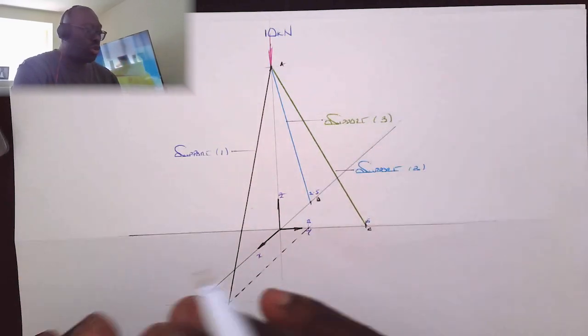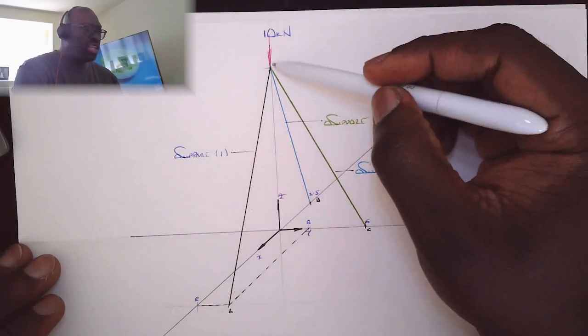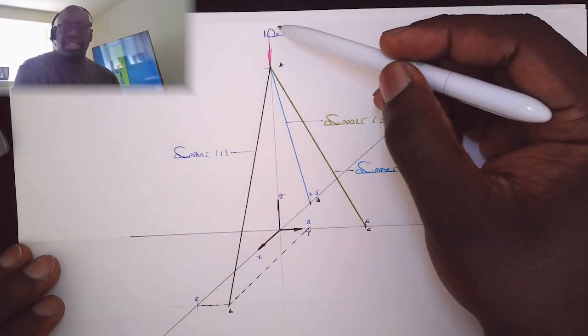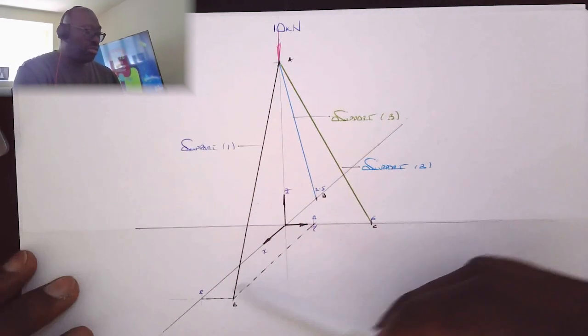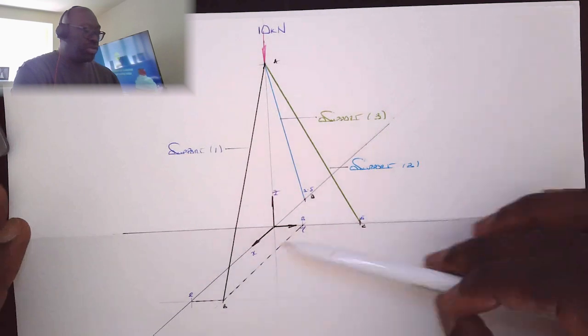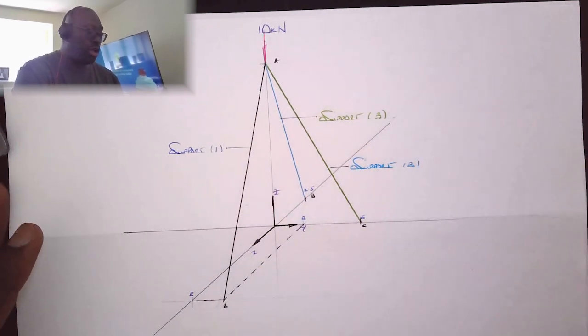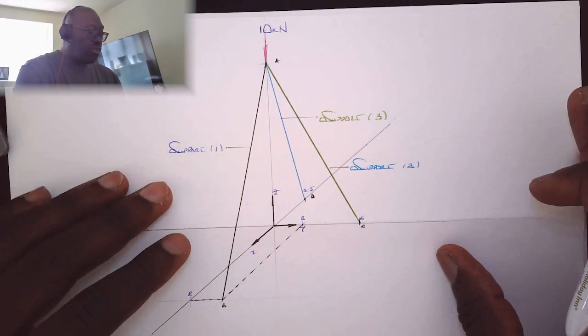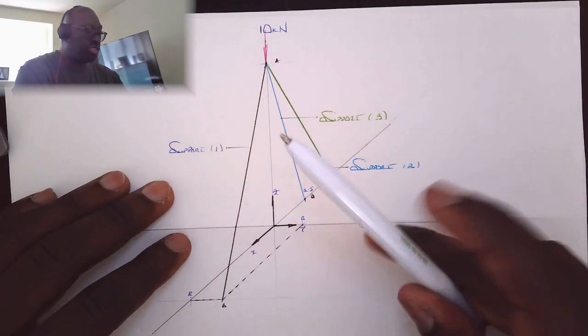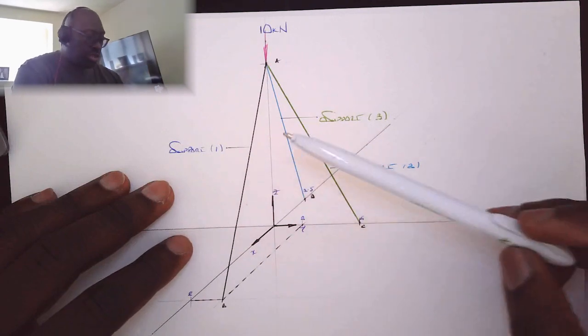So how do we go about solving such a problem? To do this, there are a number of things that we need to do first. The first thing that we need to do is we need to define what's called the position vector of the struts in relation to the position of the force. So that's the first thing that we're going to do.